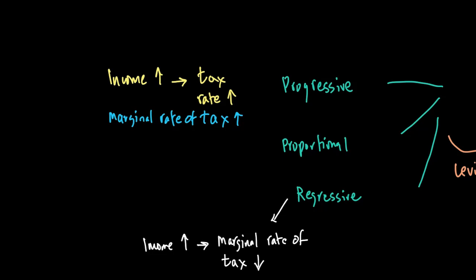Proportional taxes take the same proportion of personal income whatever the level. These taxes have a constant marginal rate of tax—the tax rate does not change when income changes. Progressive taxes have an increasing marginal rate of tax, regressive taxes have a decreasing marginal rate of tax, and proportional taxes have a constant marginal rate of tax.